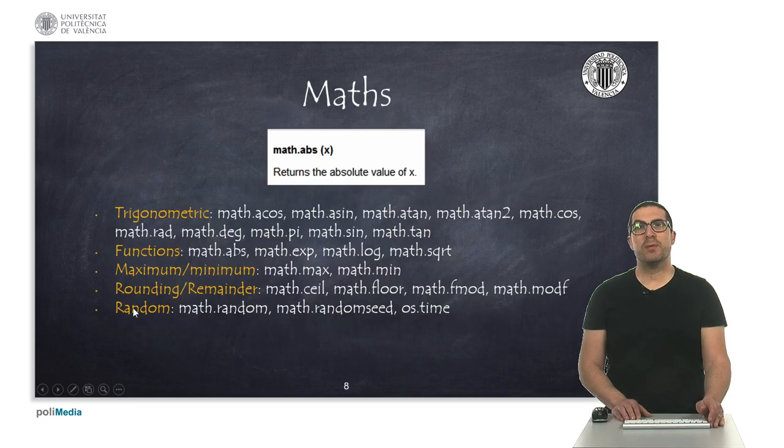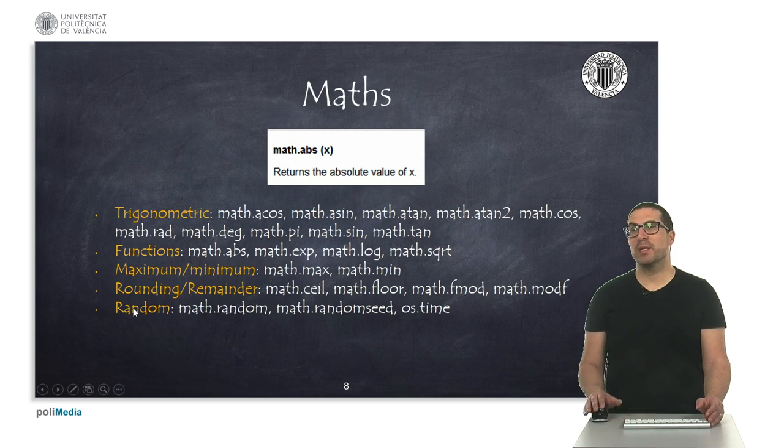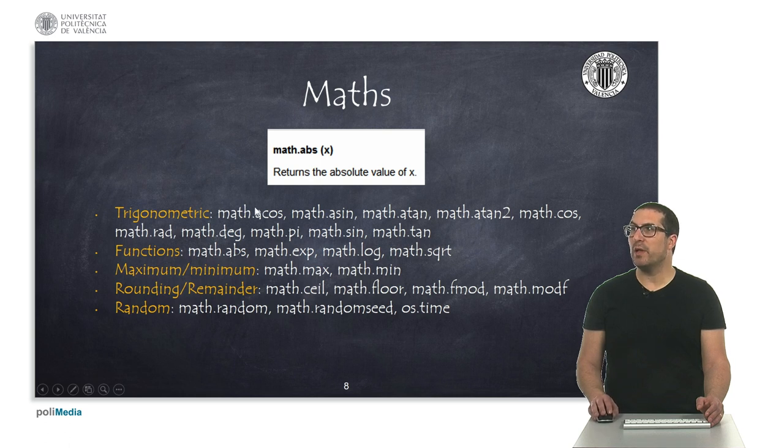And these are some of the functions or math functions that we will use over the examples. They are based on a math library that is usually integrated in the language. And as any library in Lua, you have to access the library using the name of the library. Like in this case, to access the absolute value, you need to access it with math.abs, which is the name of the function, and then provide whatever input arguments this function requires.